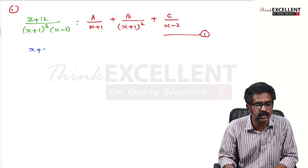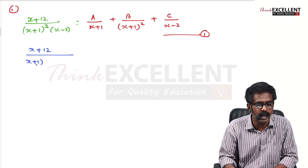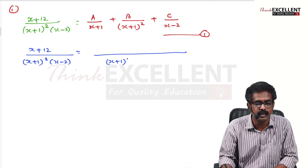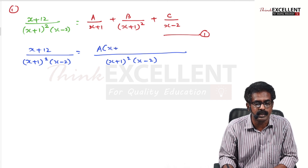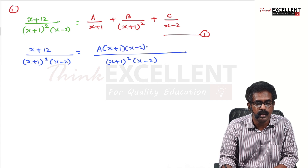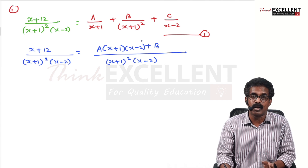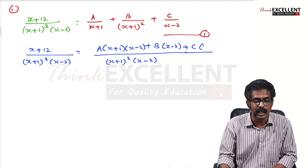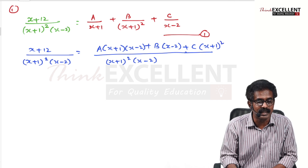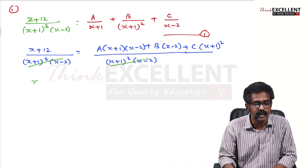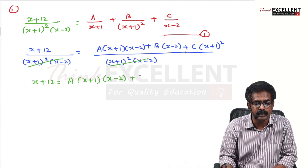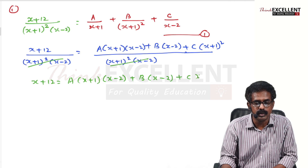On the left side, write (x + 12) / [(x + 1)² (x − 2)] as it is. On the right side, take the LCM, which is (x + 1)²(x − 2). You get: A·(x + 1)·(x − 2) + B·(x − 2) + C·(x + 1)². Cancel both denominators to get: x + 12 = A(x + 1)(x − 2) + B(x − 2) + C(x + 1)².